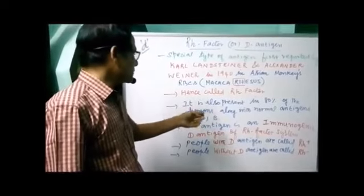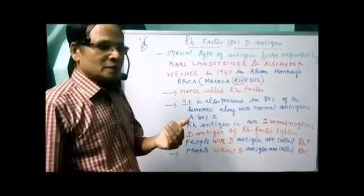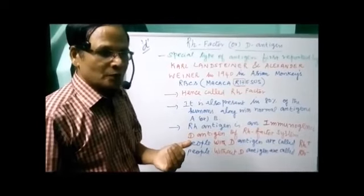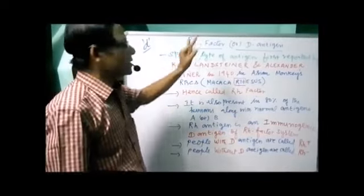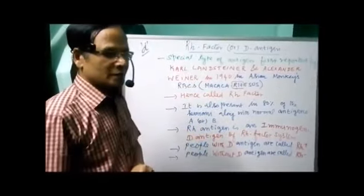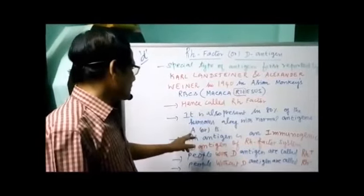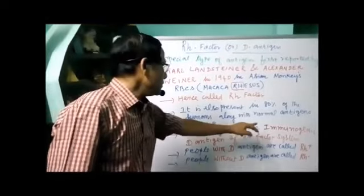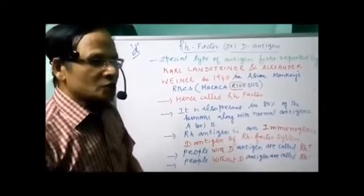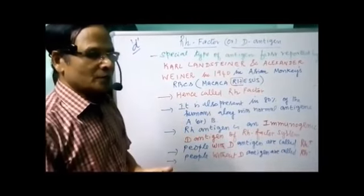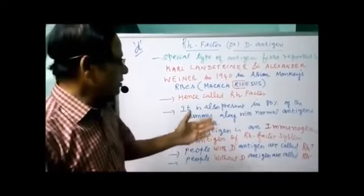So Rh antigen is also present in 80% of humans along with normal antigens A or B. For example, a person with blood group A, if he is Rh positive, he has antigen A as well as the Rh antigen. So both antigens are present on the surface of the RBC. So what is the Rh antigen? It is an immunogenic D antigen — immunogenic means it stimulates the production of antibodies, promoting the immune system to produce antibodies.